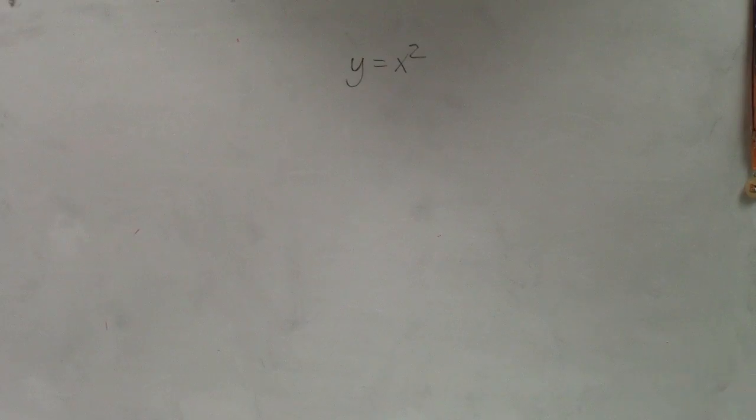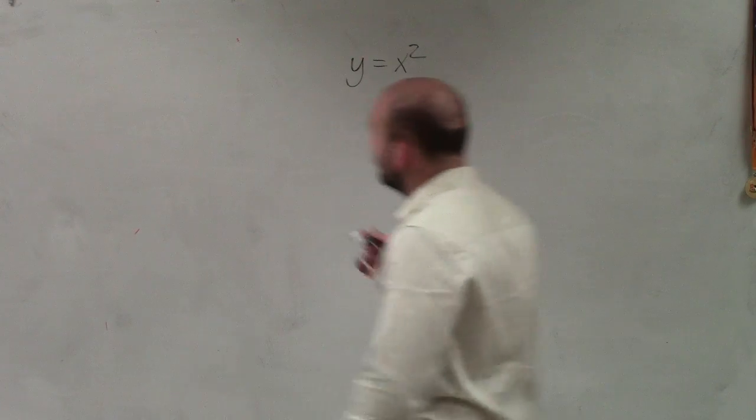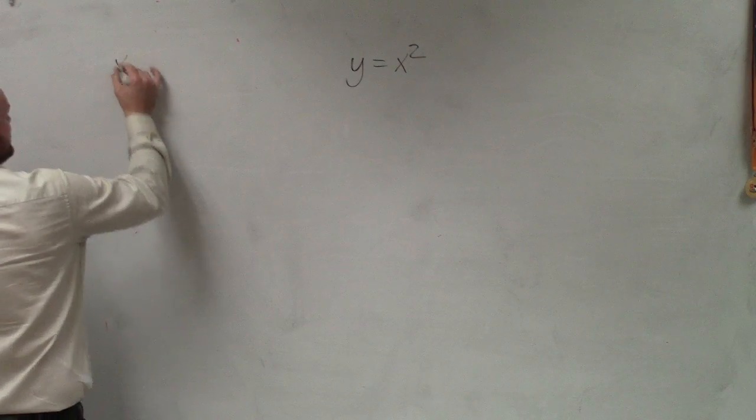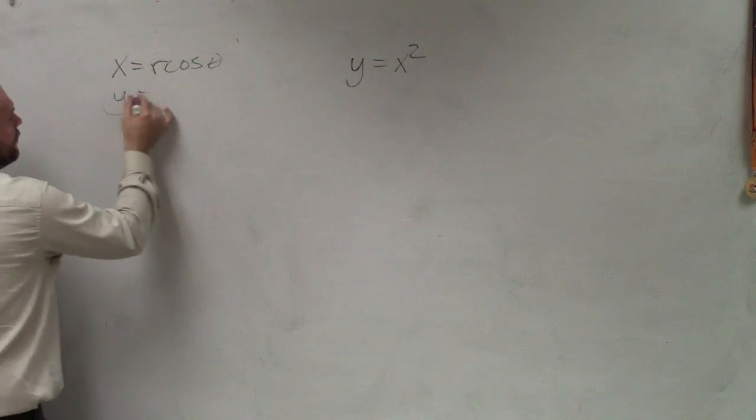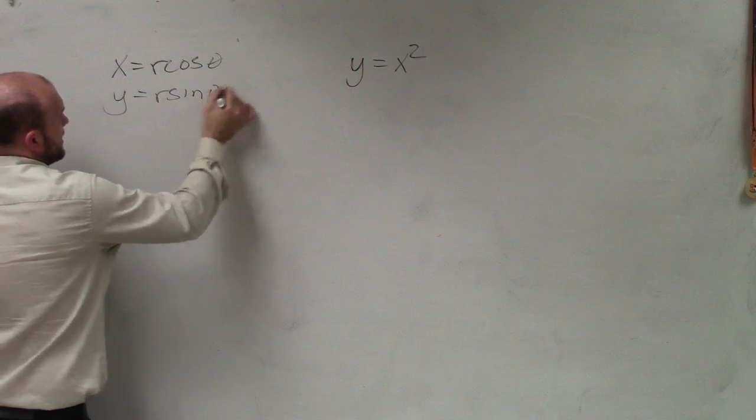Let's go ahead and see what we can do to convert this. Now, remember what I told you about converting points. We know that x equals r cosine of theta, and y equals r sine of theta.